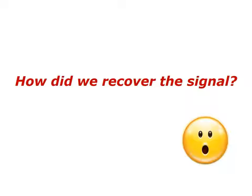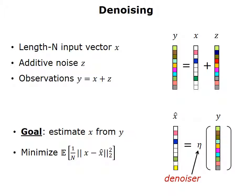How did we reconstruct this signal? The first step is the denoising step. We have an input signal x, which is a vector of length n, and we have additive noise z, resulting in noisy observations y. The goal is to estimate the input x from the noisy y, and we do so using a denoiser eta that minimizes the mean square error between x and x-hat, which is the estimated version of x.